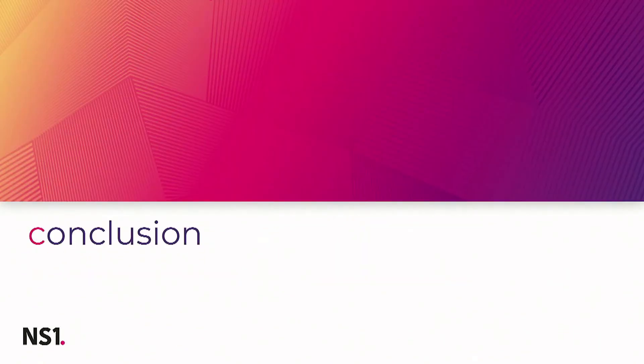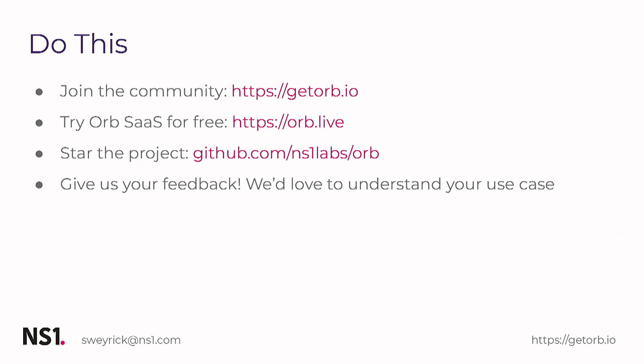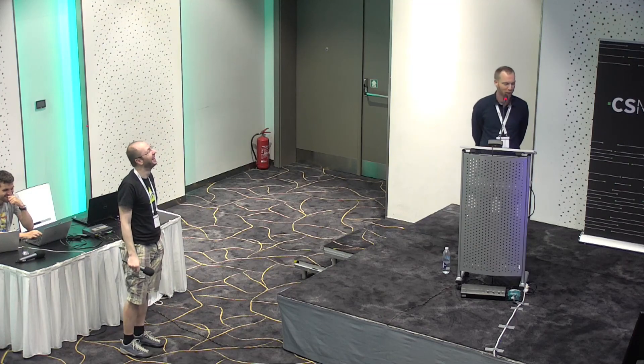In summary: ORB is an observability tool focused on distributed edge networks, using the small data paradigm paired with dynamic policy orchestration. The idea is collecting insights from the distributed edge and plugging them into modern observability stacks — all free and open source software. The main community site is orb.io, the SaaS site is orb.live to try it out, the code and issues are on GitHub, and feedback is welcome. One question from the audience: do you support IPv6? Yes, we 100% support IPv6.